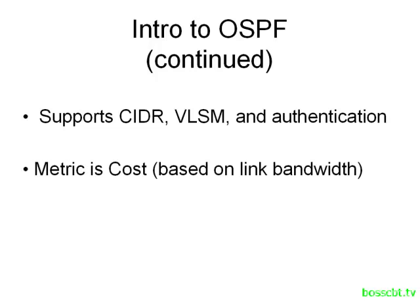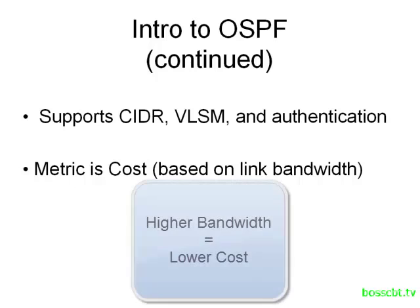When you talk about OSPF, the metric involved is known as cost, and this cost is derived from the bandwidth of the links on your network. The higher the bandwidth, the lower the cost, and OSPF — just like us — wants to pay as little as possible, so it prefers the lowest cost path to a destination.